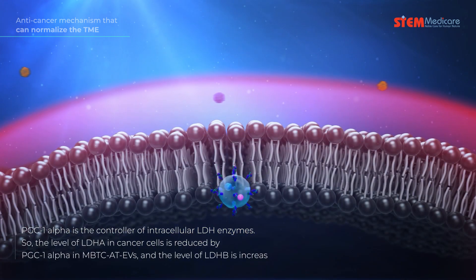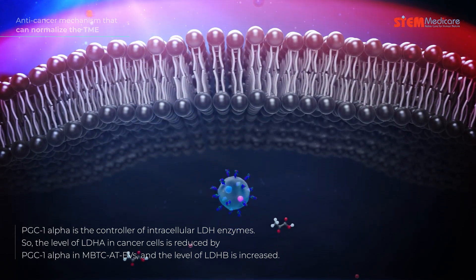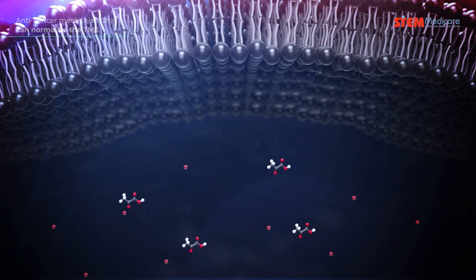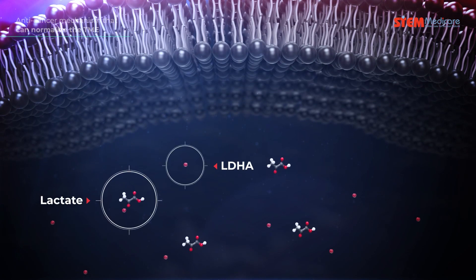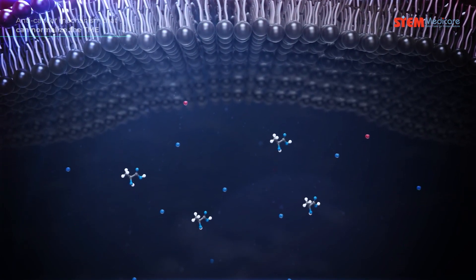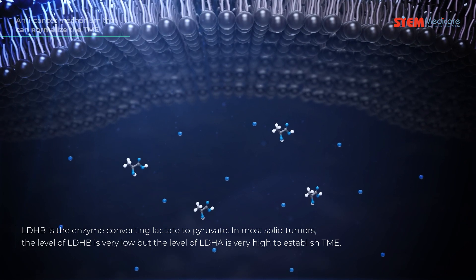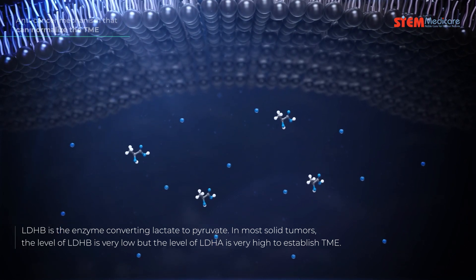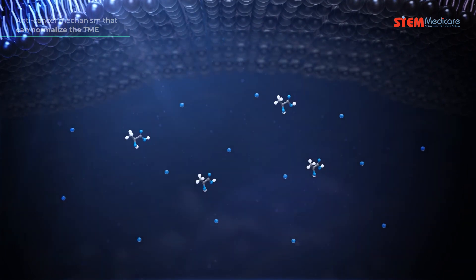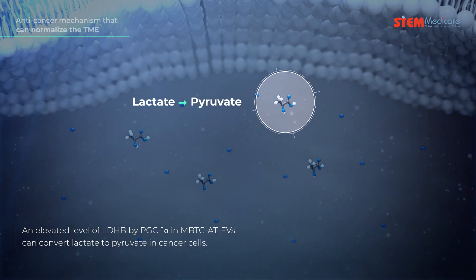PGC-1-alpha is the controller of intracellular LDH enzymes. The level of LDHA in cancer cells is reduced by PGC-1-alpha and MBTC-80-EVs, and the level of LDHB is increased. LDHB is the enzyme converting lactate to pyruvate. In most solid tumors, the level of LDHB is very low, but the level of LDHA is very high, establishing the tumor microenvironment.